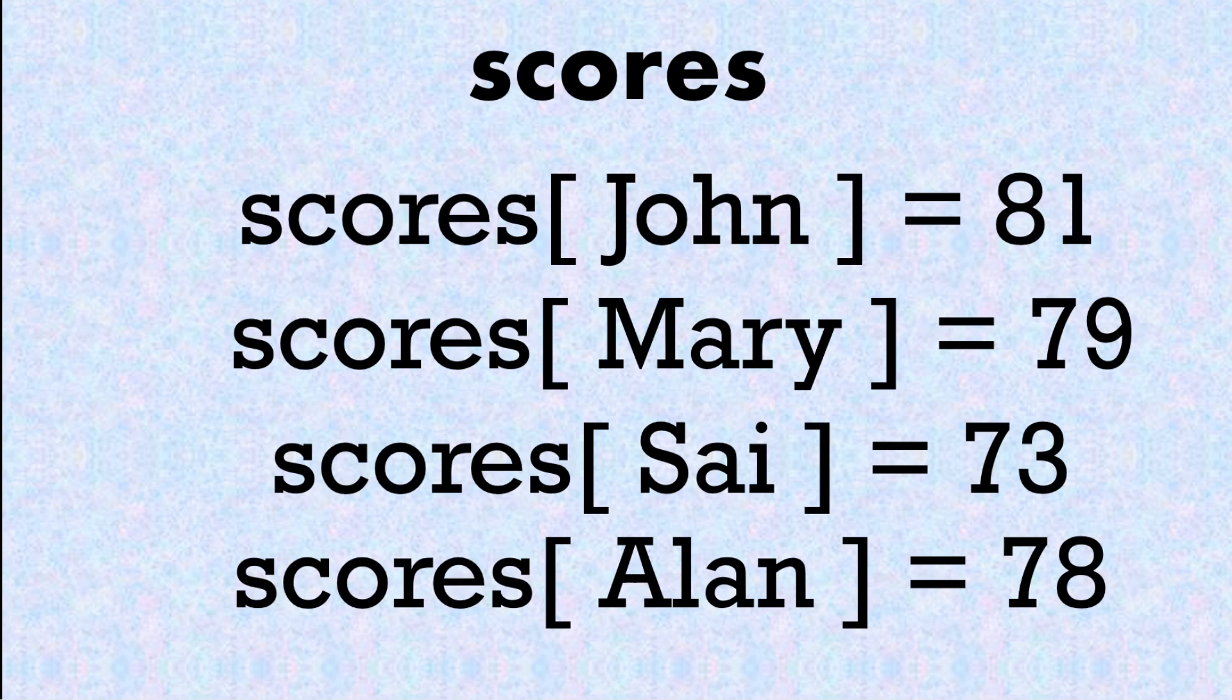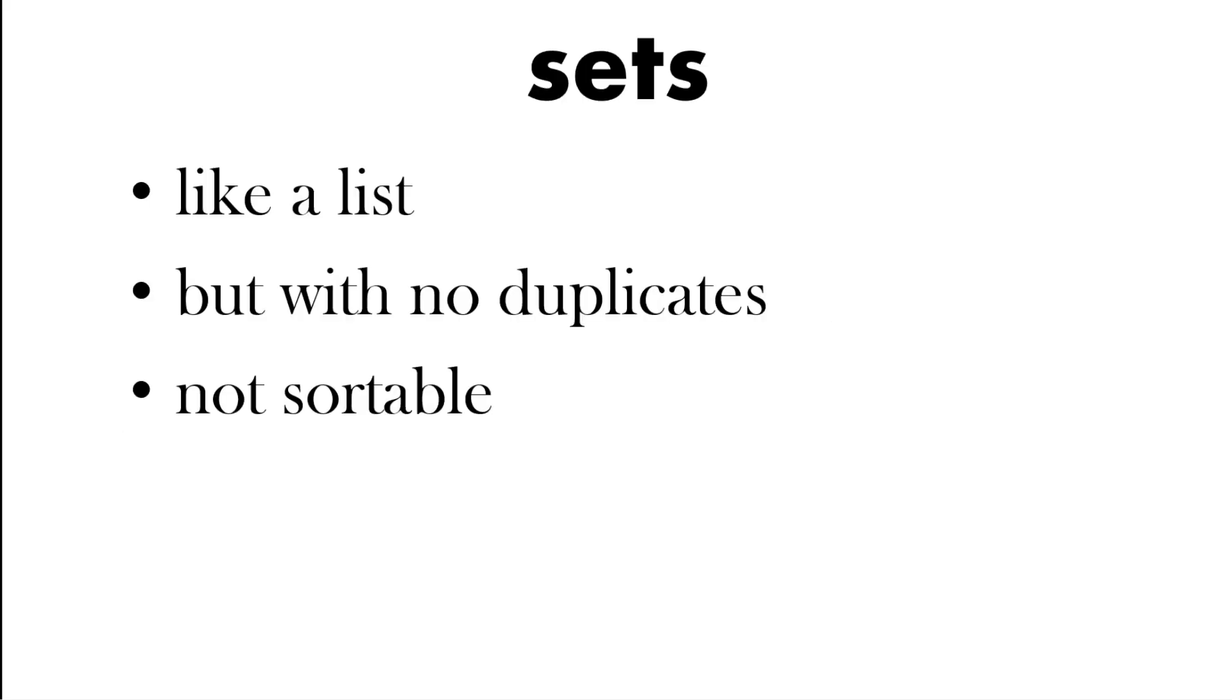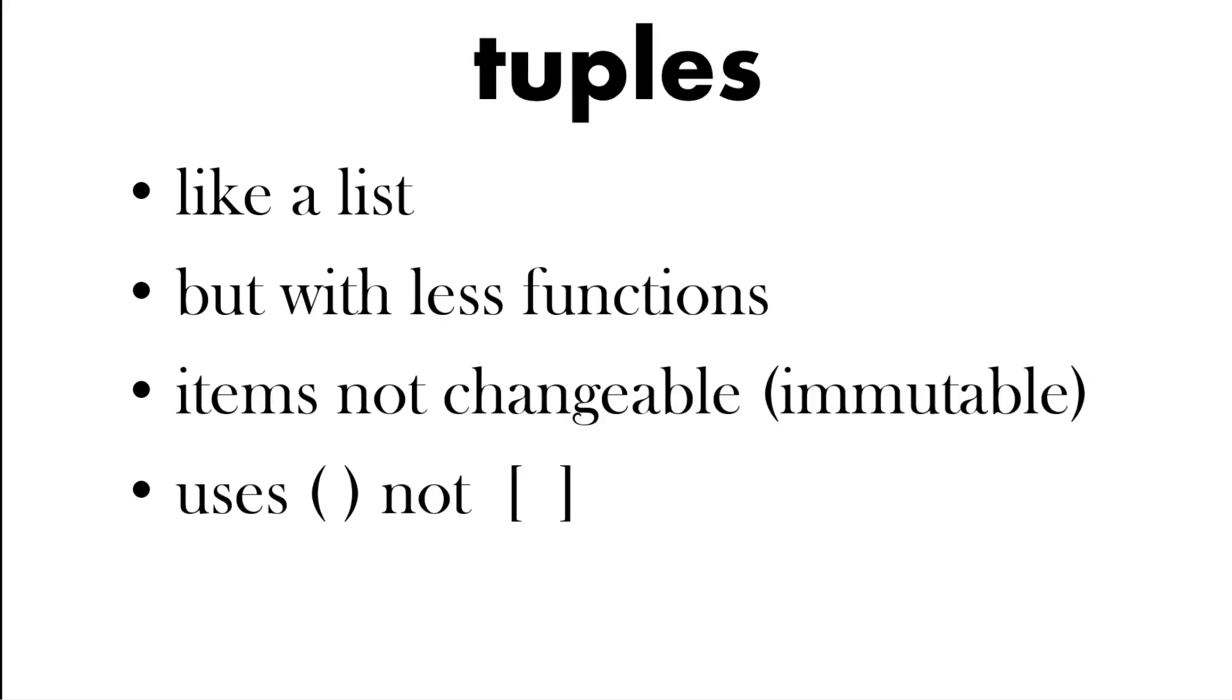We mentioned sets, which are like a list but they don't have duplicates, you can't sort them. Tuples, a bit like a list again, don't really have so much functions and they're immutable, so you can't change the items.